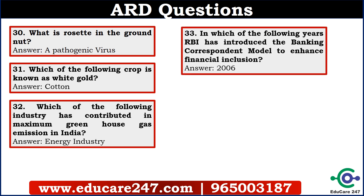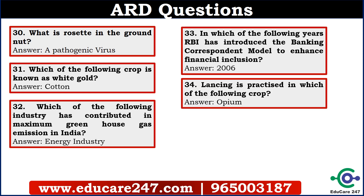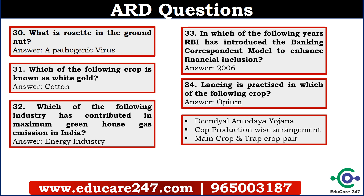The thirty-third question is: in which of the following years did RBI introduce the banking correspondent model to enhance financial inclusion? The answer is 2006. The thirty-fourth question is: Lancing is practiced in which of the following crop? The answer is opium. There were also questions on Deen Dayal Antyodaya Yojana, crop production-wise arrangement, main crop and trap crop pairs. This was the EDUCARE 247 discussion about the ARD section.